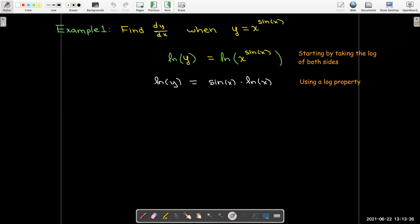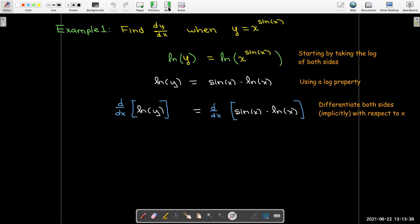Now I can differentiate both sides. On the left-hand side, I'll have to use implicit differentiation. On the right-hand side, I can just use straightforward explicit differentiation. So I'll get 1 over y times y prime on the left. On the right, I'll need to use the product rule. So the derivative of sine would be cosine of x times natural log of x, and then I'll have plus sine of x times the derivative of natural log of x, which is 1 over x.